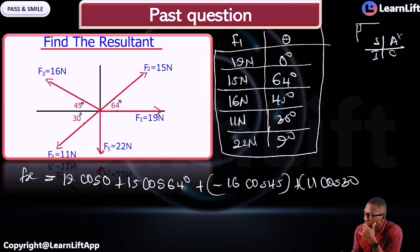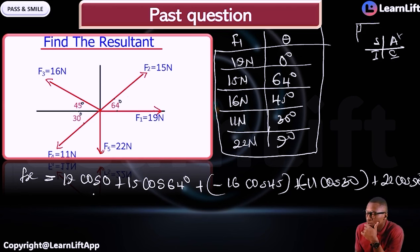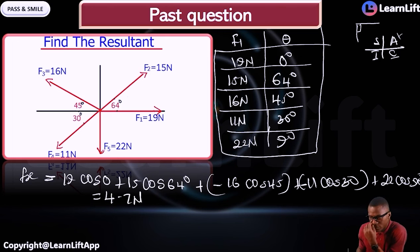F4 = 11 N is in the third quadrant — don't forget it's negative — so minus 11 cos 30°. In the fourth quadrant, cosine is positive: plus 22 cos 90°. Calculate all that and it gives you 4.7 N.